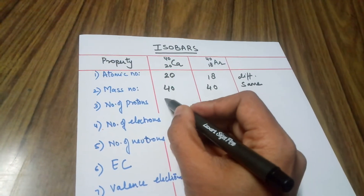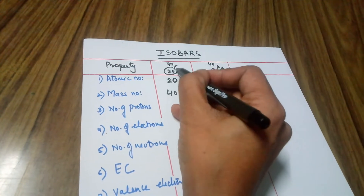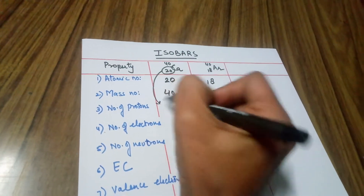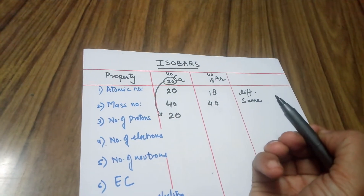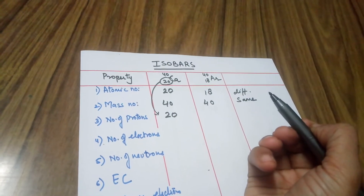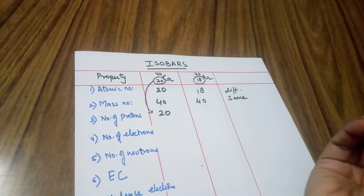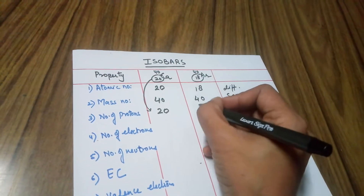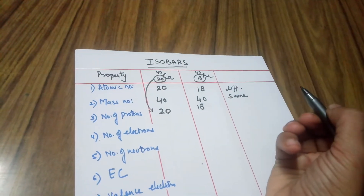Moving to the number of protons. The number of protons is the same as the atomic number. So the number of protons for calcium is 20, meaning there are 20 positive charges. For argon it is 18. So the number of positive charges are different.